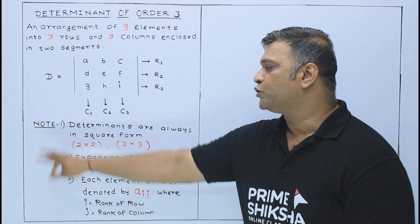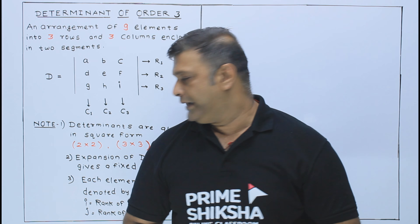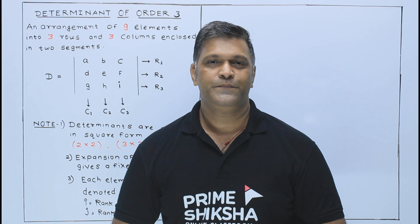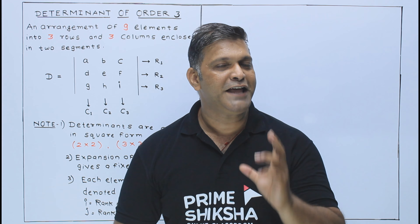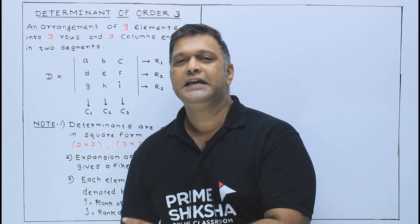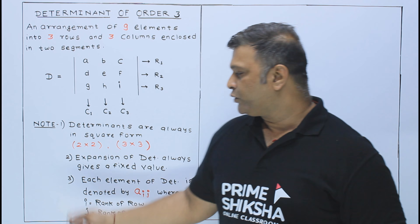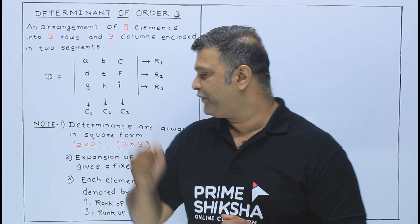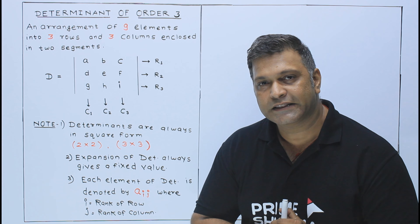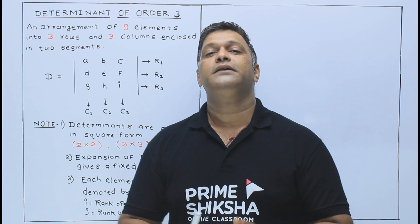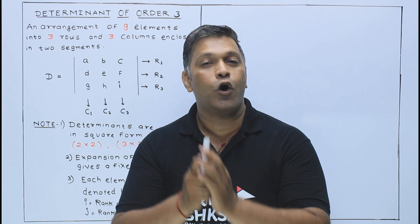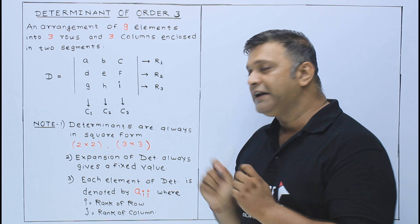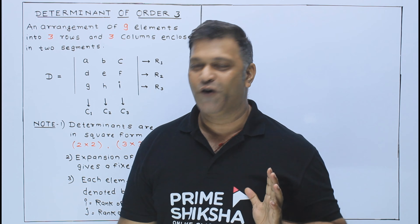Note number 1: Determinant हमेशा square form में लिखोगे — मतलब जितने आपके पास rows हैं, उतनी ही columns होनी चाहिए. So Determinant order 2×2 बन सकता है, या Determinant order 3×3 बन सकता है. कभी भी Determinant square के अलावा किसी और form में नहीं होता. So Determinant is always in the square form.